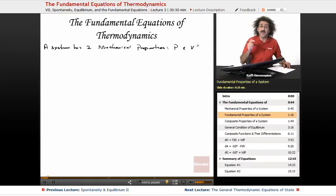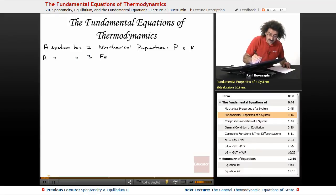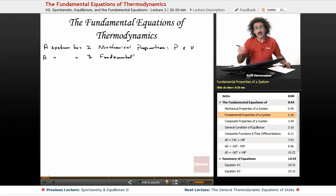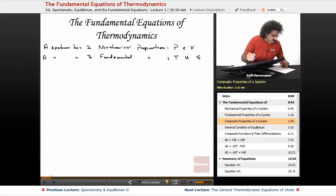A system has three fundamental properties. These fundamental properties correlate to the laws of thermodynamics: the zeroth law, the first law, and the second law. They are the temperature, the energy, and the entropy. Zeroth law, first law, second law. These are the fundamental properties.